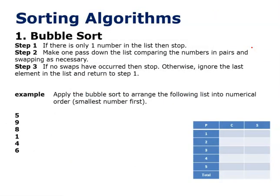The Bubble Sort has three rules we need to do. If there's only one number in the list, then stop. Make one pass down the list, comparing numbers in pairs, and do a little swap if you need to. And if no swaps have occurred, then you can stop. Otherwise, ignore that last element of the list and return to step one.